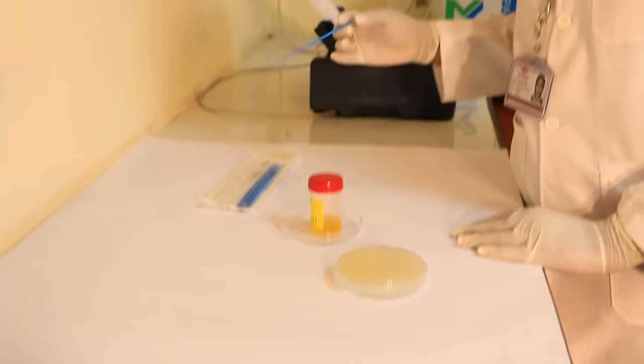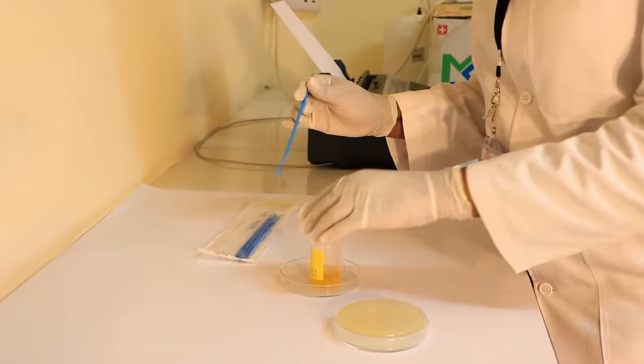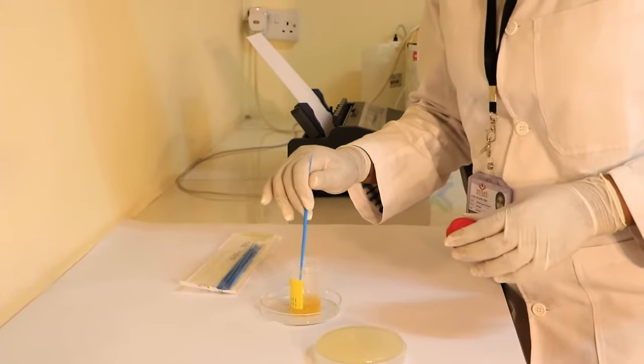To perform a urine colony count, take a sterile wire loop and pick one microliter of urine.